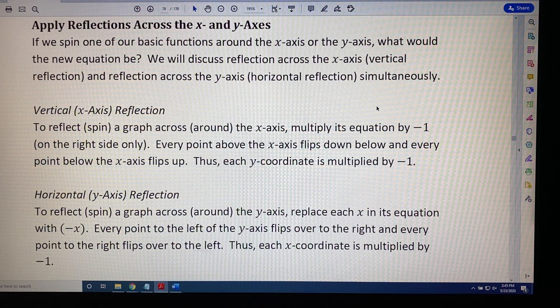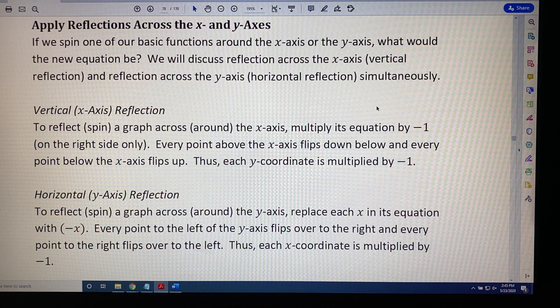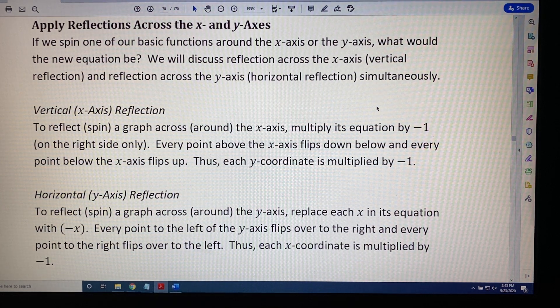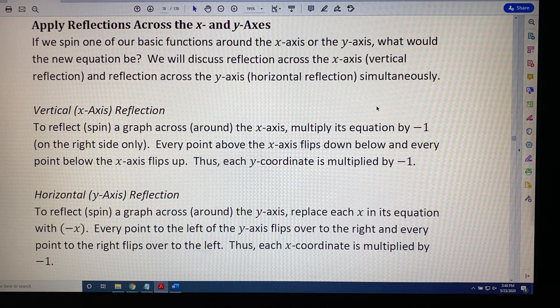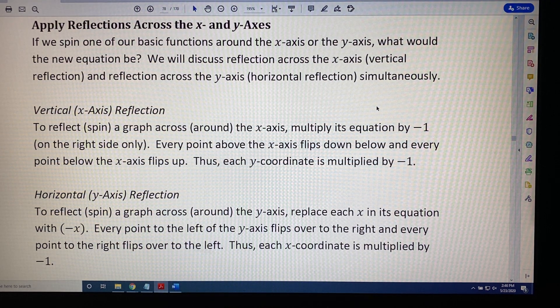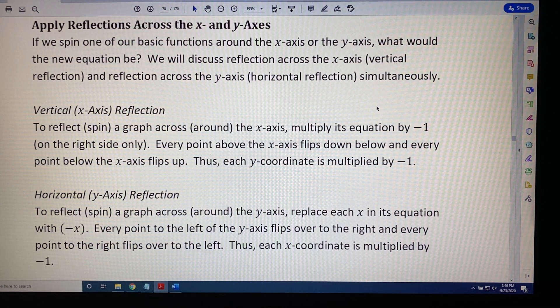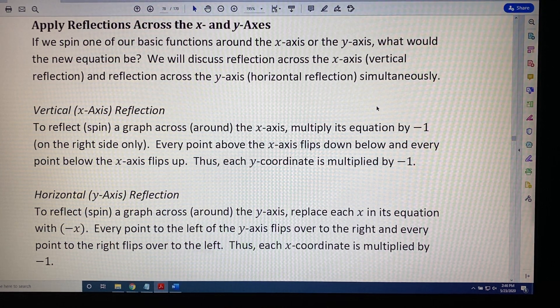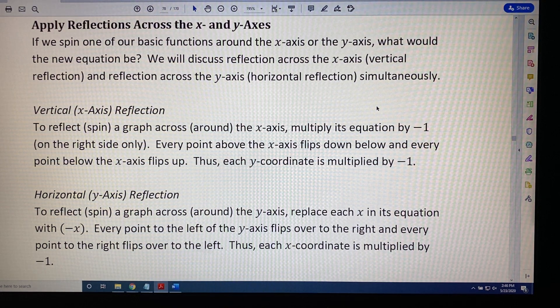Vertical x-axis reflection. To reflect or spin a graph across or around the x-axis, multiply its equation by negative one on the right side only. Every point above the x-axis flips down below, and every point below the x-axis flips up. Thus, each y-coordinate is multiplied by negative one.